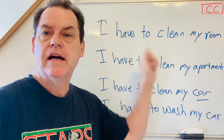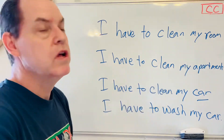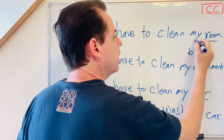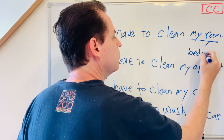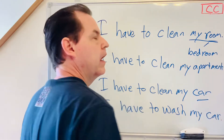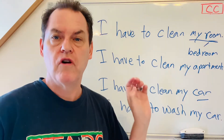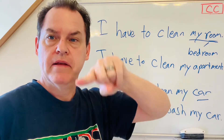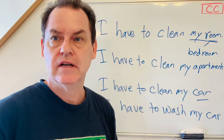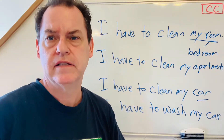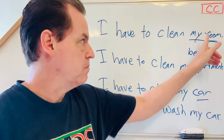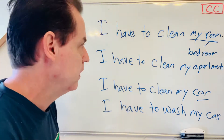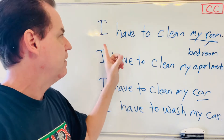Okay, so: I have to clean my room. Room equals bedroom — my room equals bedroom. In Japan, sometimes they use 'room' for apartment, but no — an apartment is an apartment in an apartment building. I think it's because of hotels; in a hotel, it's 'room,' but in an apartment, it's 'an apartment.' So 'my room' equals bedroom only. I have to clean my room.